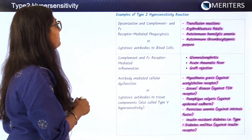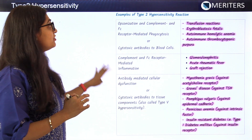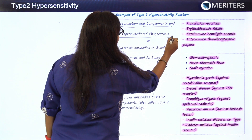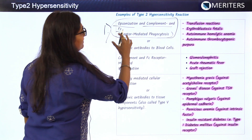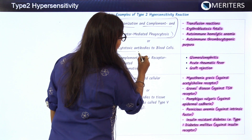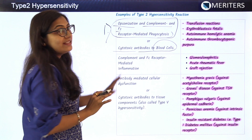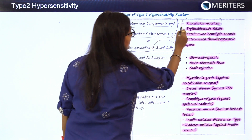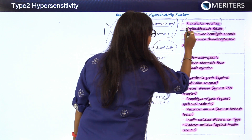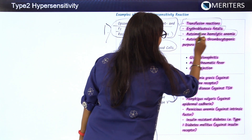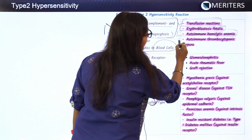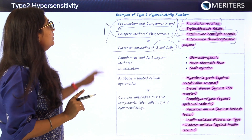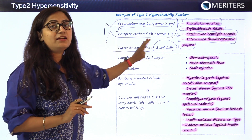The first mechanism — opsonization and complement and FC receptor-mediated phagocytosis — includes these examples: transfusion reactions, erythroblastosis fetalis, autoimmune hemolytic anemia, and autoimmune thrombocytopenic purpura. These four conditions must be remembered as acting through opsonization and complement and FC receptor-mediated phagocytosis.